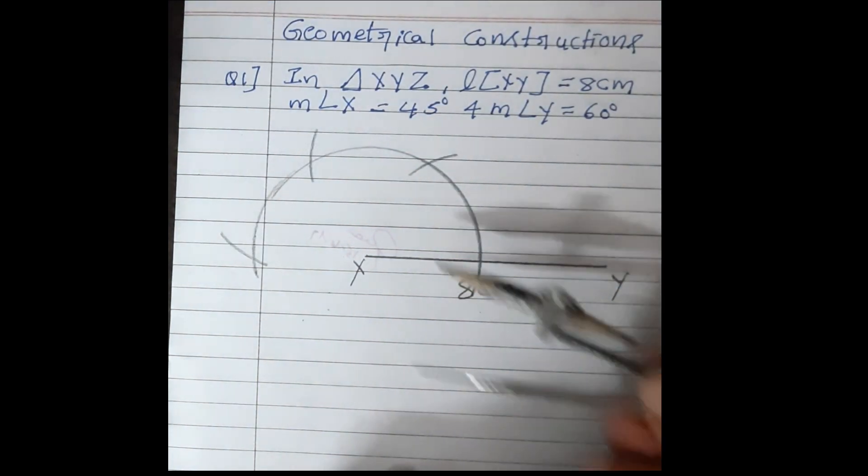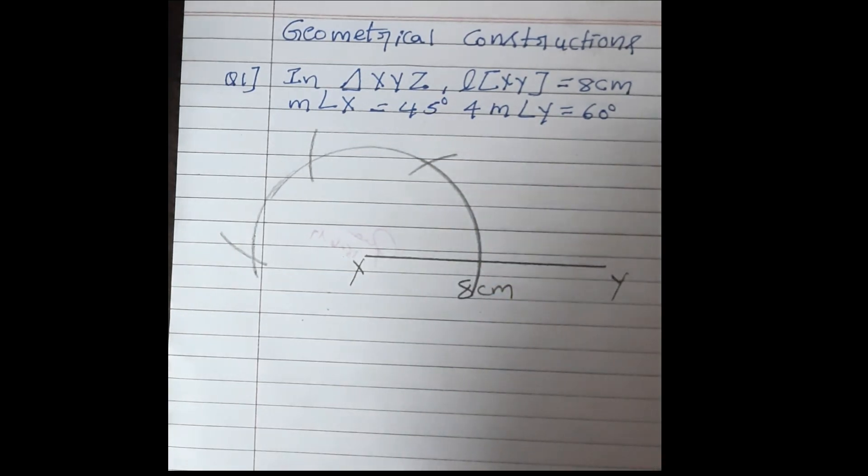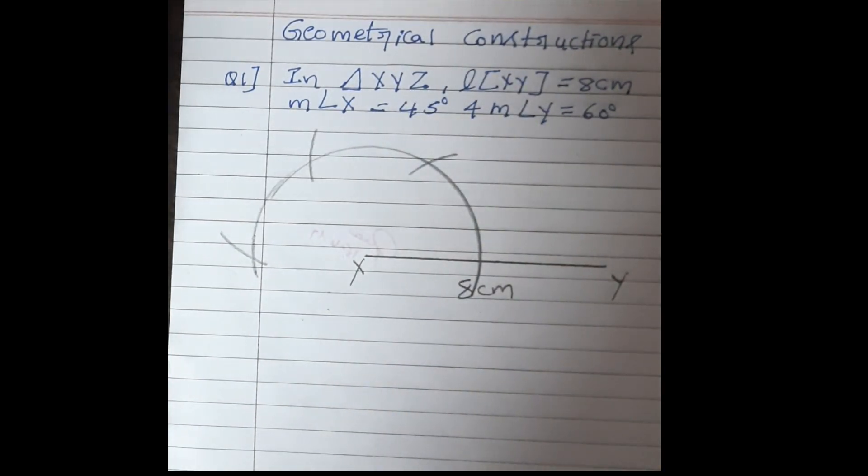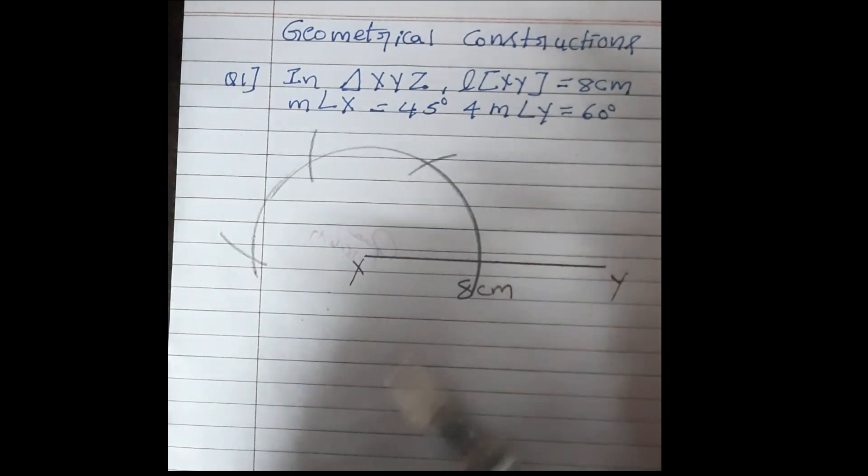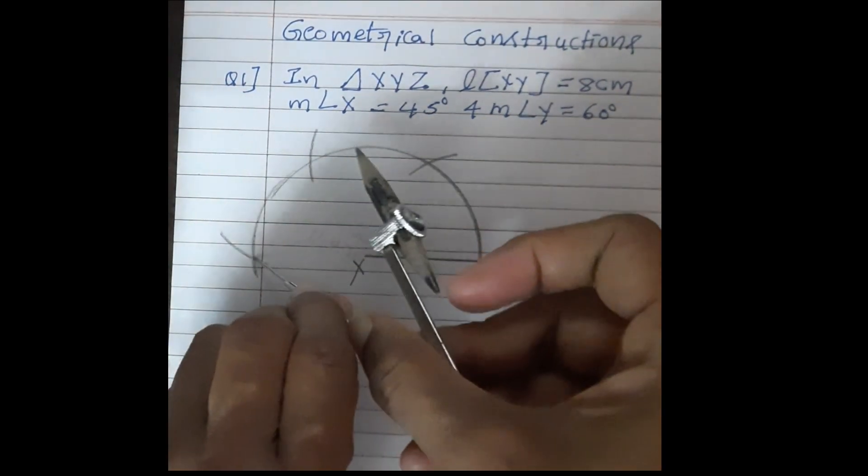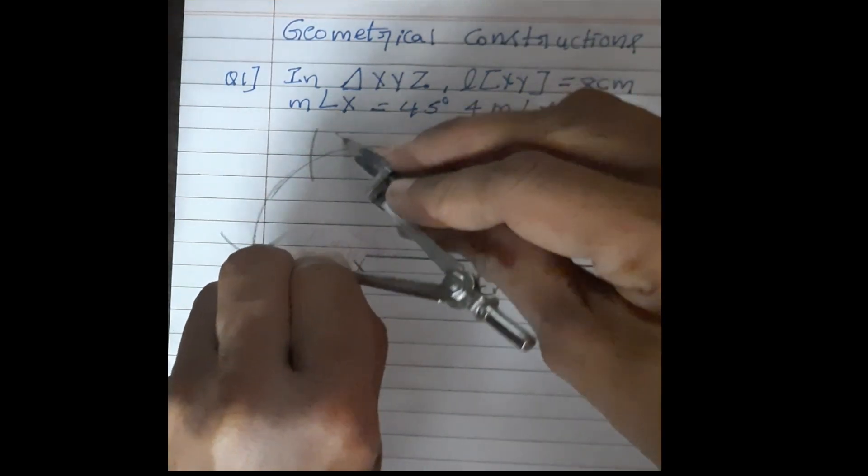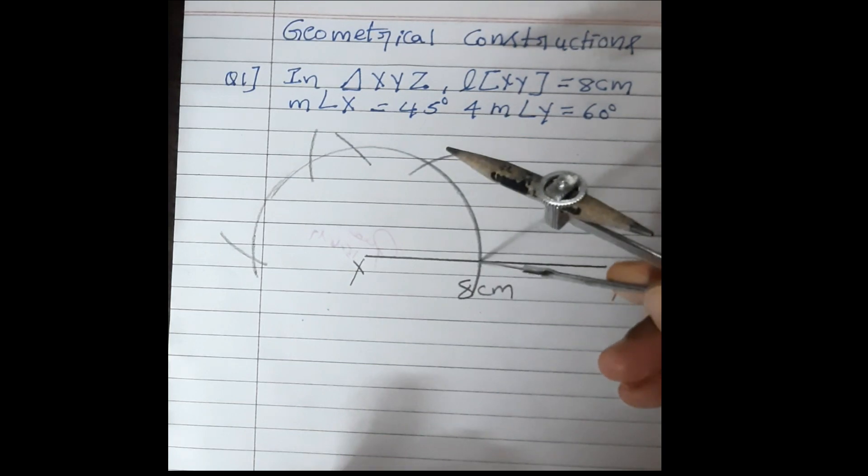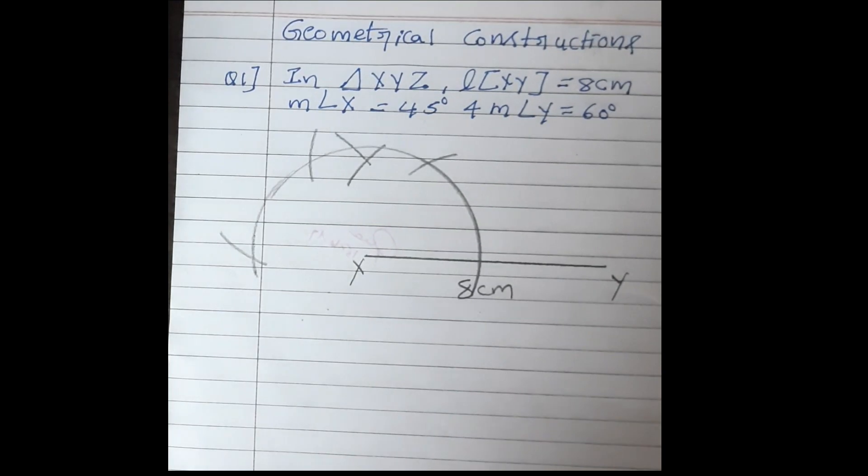Now, we have to construct 45 degrees means first, we have to construct 90 degrees. So, this compass, little bit, we have to extend the measurement. And taking 180 degrees, keeping 180 degrees here, we have to cut one arc like this. And 0 is here, one more arc we have to cut. Because we have to construct 90 degrees.